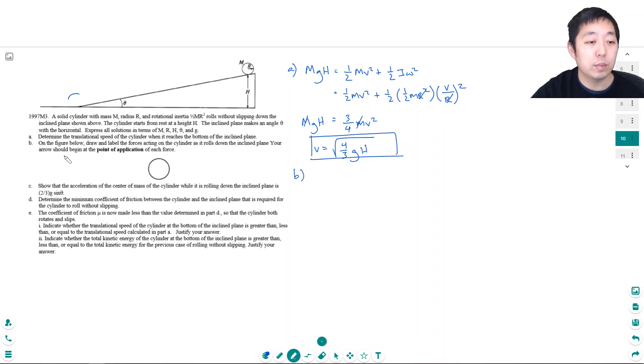Part B: On the figure below, draw and label the forces acting on the cylinder as it rolls down the inclined plane. Your arrow should begin at the point of application of each force. So gravity is always straight down. We have the normal force perpendicular to the plane, and then the frictional force is like this.